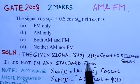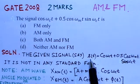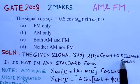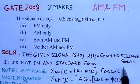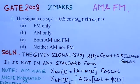The given signal, we can write this equation as z(t) = cos(ω_c·t) + 0.5·cos(ω_m·t)·sin(ω_c·t). It is not in any standard form.